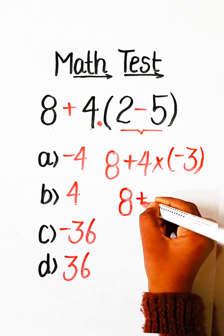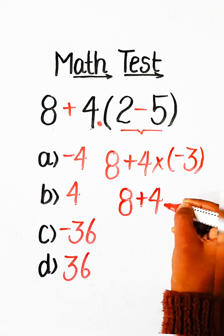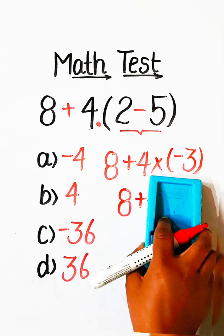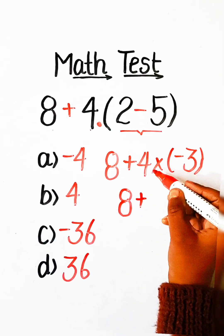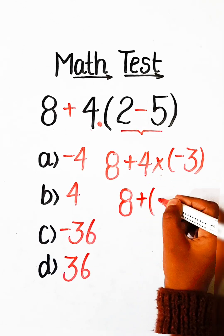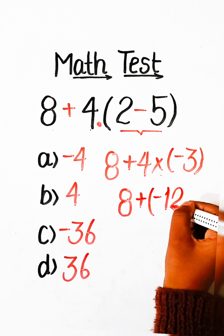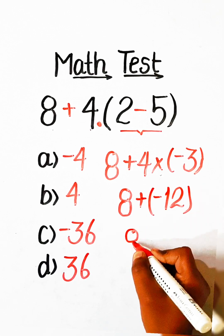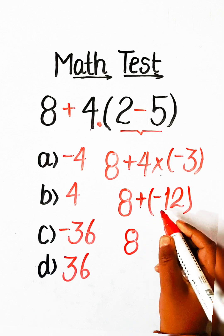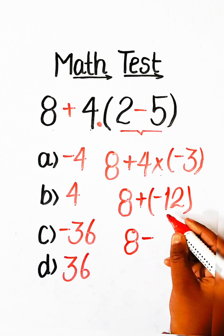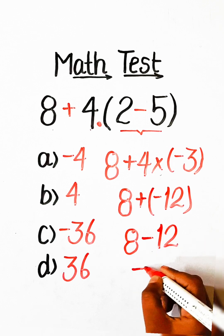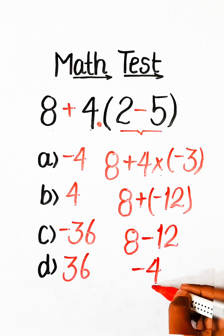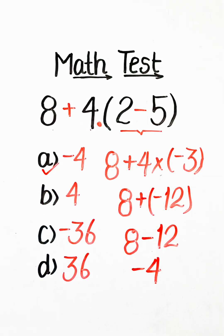So we have 8 plus 4 multiplied by minus 3, which is minus 12. Therefore 8 minus 12 is minus 4, so Option A, minus 4, is the correct answer.